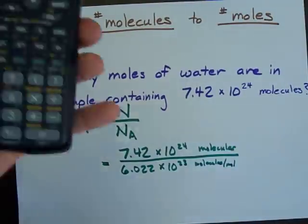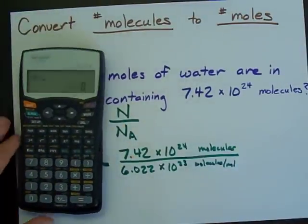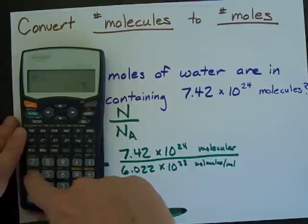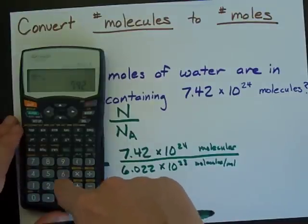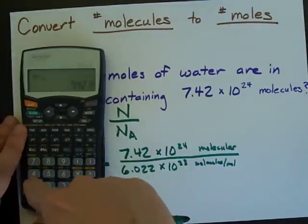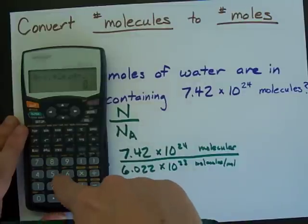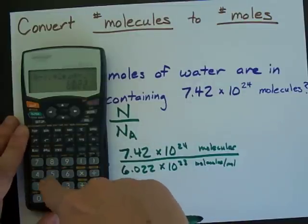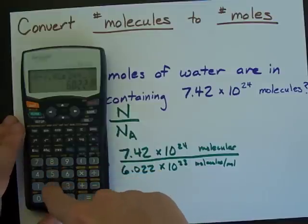If I enter that on my calculator, what I'll be doing is 7.42 times 10 to the power of 24 divided by 6.022 times 10 to the power of 23.